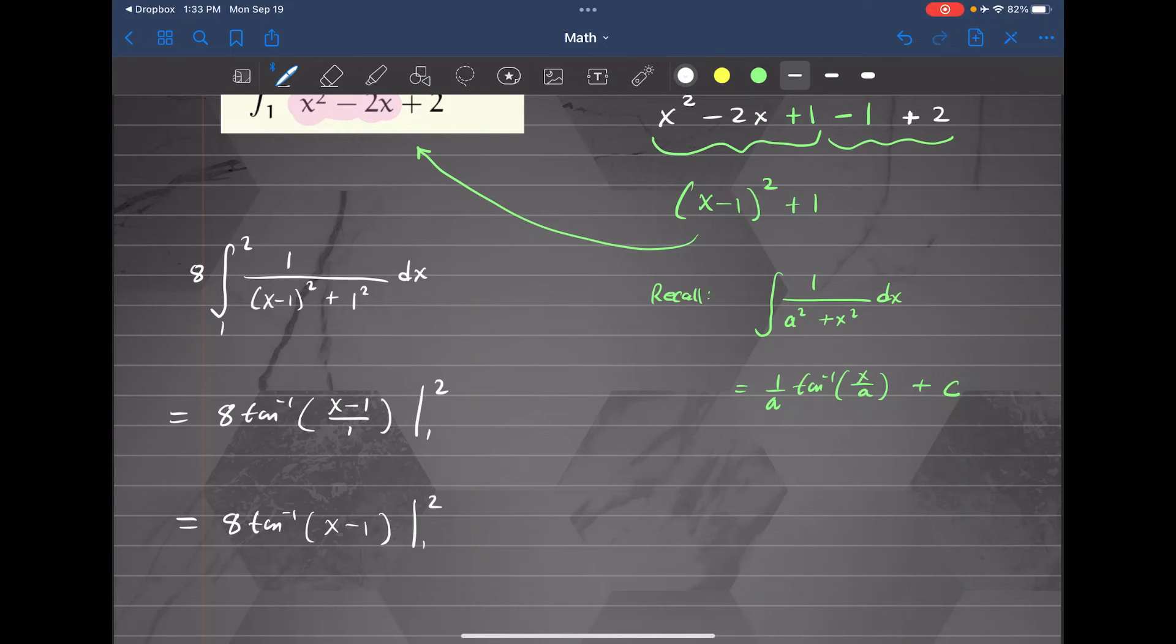And now we can use the fundamental theorem of calculus evaluated at the upper limit minus the lower limit of integration. This is 8 times tangent inverse of 2 minus 1 minus 8 times tangent inverse of 1 minus 1. 1 minus 1 is 0. Tangent inverse of 0 is 0. So that disappears.